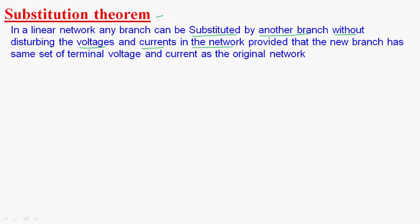According to this theorem, we can substitute one branch by another branch, but the voltages and currents in the network should not be changed. This is provided that the new branch has the same set of terminal voltage and current as that of the original network.